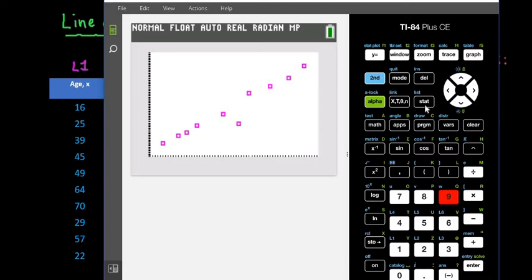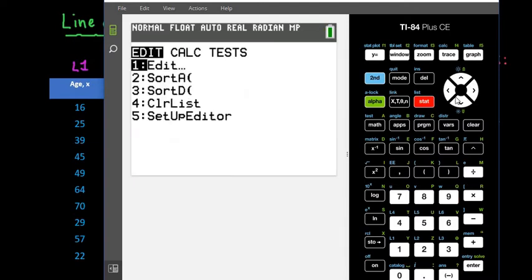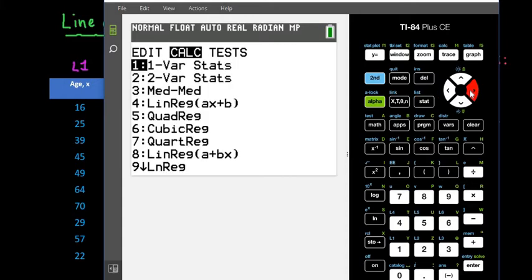So what we're going to do to come up with the equation is we are going to hit stat and go over to calculate and depending upon the course that you are in, you will either choose option 4 or option 8. If you're in an algebra class or your textbook uses the equation y hat equals mx plus b or y hat equals ax plus b, then you would choose option 4.